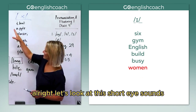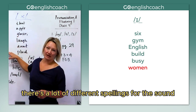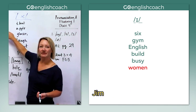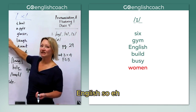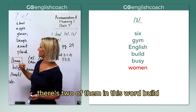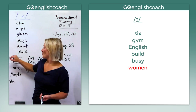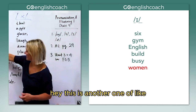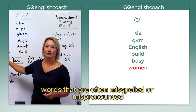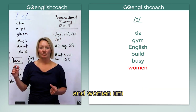Great. Let's look at the short I sound. There are a lot of different spellings for this sound as well. We've got: six, gym, English — there are two of them in that word — build, busy, and women. This is in the same category as 'said' — words that are often misspelled or mispronounced. There's a very small difference between 'women' and 'woman,' and you really have to practice that.